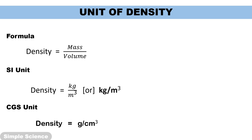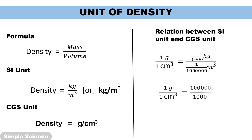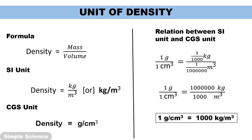Now what is the relation between gram per centimeter cube and kg per meter cube? 1 gram per centimeter cube equals 1 gram upon 1 centimeter cube. Since 1 gram is 1/1000 kg and 1 centimeter cube is 1/10⁶ meter cube, when you rearrange, 1 gram per centimeter cube equals 1000 kg per meter cube. So whenever a value is given in gram per centimeter cube and you need to convert it to kg per meter cube, multiply by 1000.